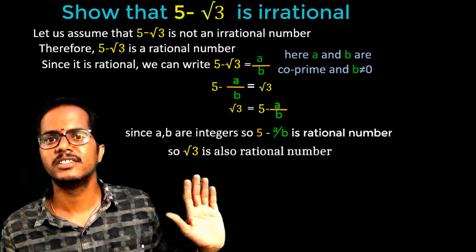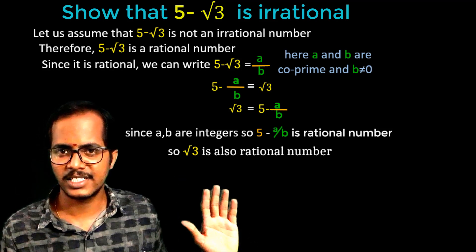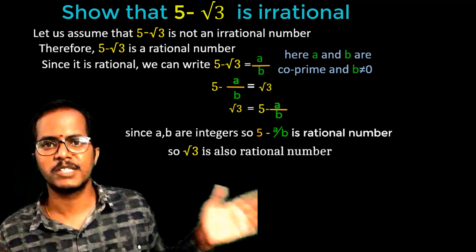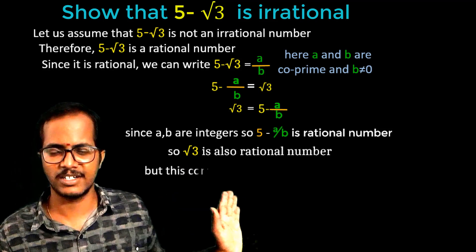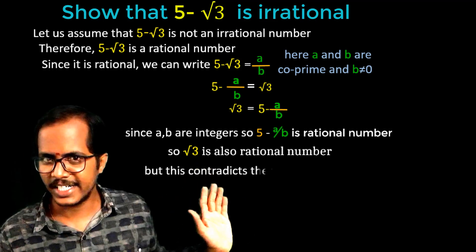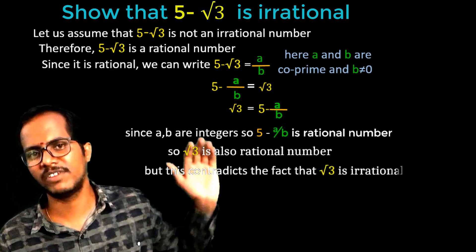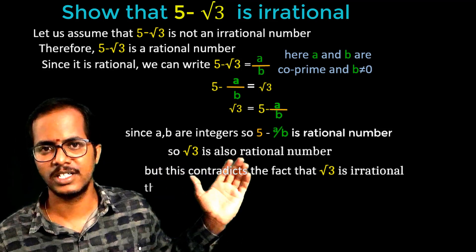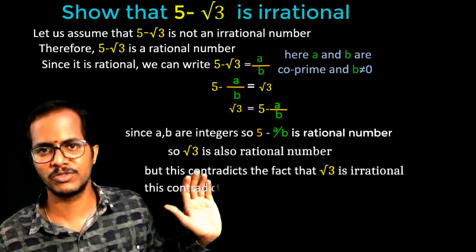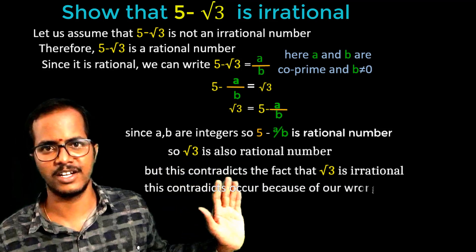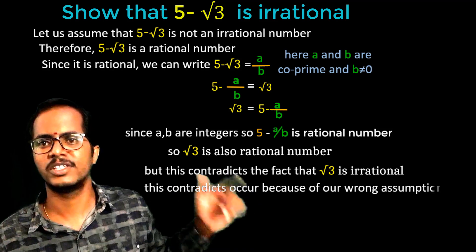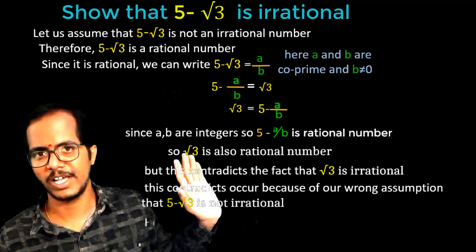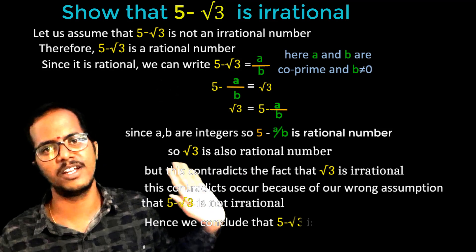But we know that square root 3 is not a rational number — it is an irrational number. That means we are getting a contradiction. This contradiction has arisen because of our wrong assumption. Our assumption was that 5 minus root 3 is not an irrational number. That is a wrong assumption. So what is true? 5 minus root 3 is an irrational number.